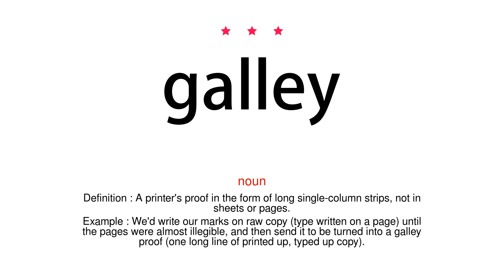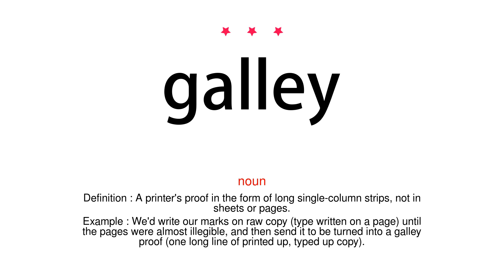Noun. Definition: A printer's proof in the form of long single-column strips, not in sheets or pages. Example: We'd write our marks on raw copy typewritten on a page, until the pages were almost illegible, and then send it to be turned into a galley proof — one long line of printed, typed-up copy.